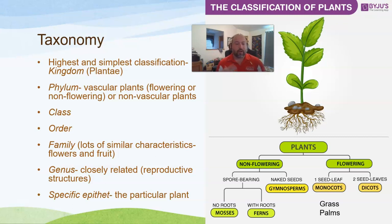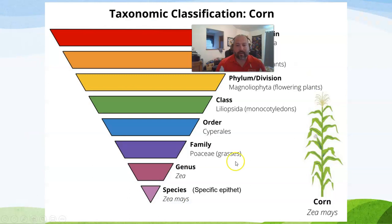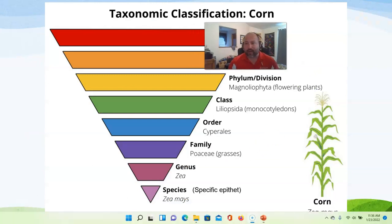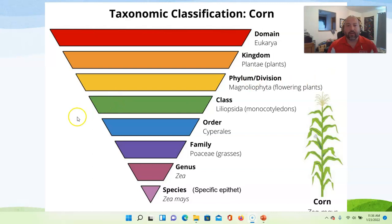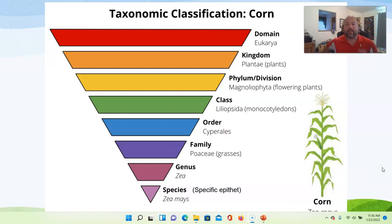Then we get down to the specific epithet, which is what we think of as the species level. When naming a plant, we combine the genus and the specific epithet to make the species name — it's saying it's part of this group, but here's the specific one. Here's a full taxonomic classification example for corn.